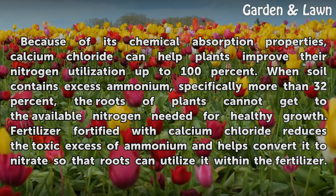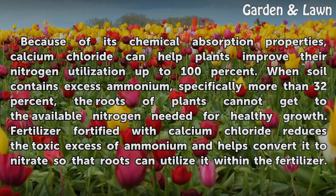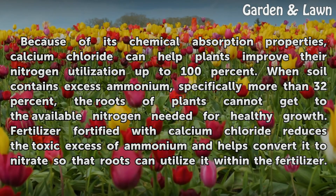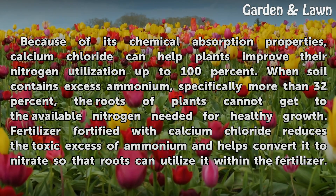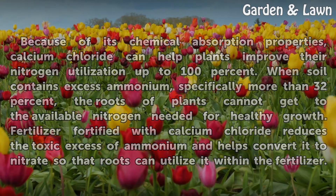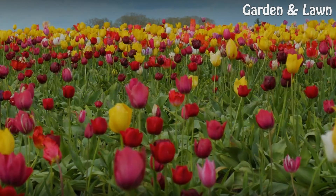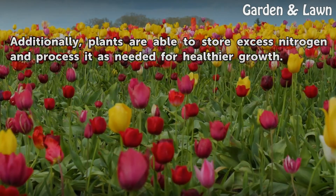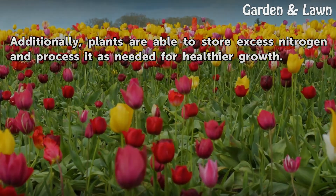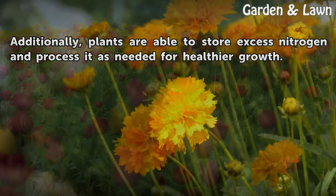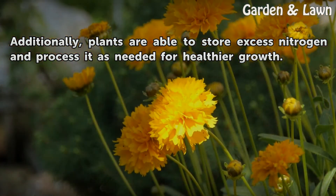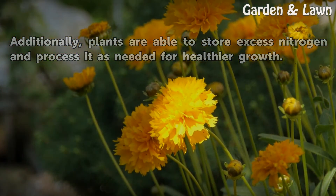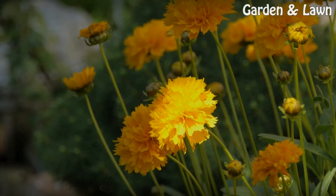Fertilizer fortified with calcium chloride reduces the toxic excess of ammonium and helps convert it to nitrate so that roots can utilize it within the fertilizer. Additionally, plants are able to store excess nitrogen and process it as needed for healthier growth.